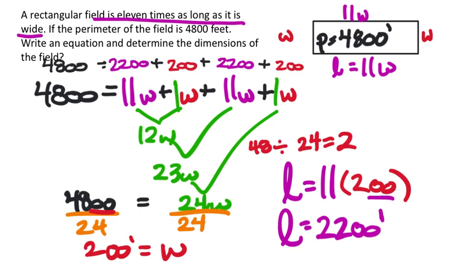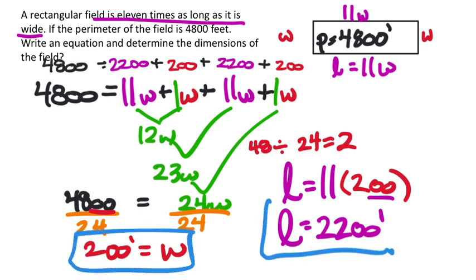We can feel comfortable boxing in our answers: the width is 200 feet and the length is 2,200 feet.